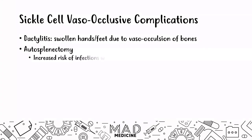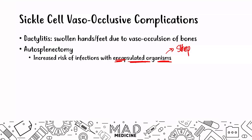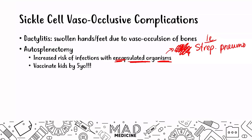Autosplenectomy puts patients at increased risk for infections with encapsulated organisms — most importantly Strep pneumoniae. You want to vaccinate these kids by age five. This also leads to increased risk of osteomyelitis, where Salmonella paratyphi is one of the main causes of osteomyelitis in sickle cell patients. Both of these associations are very important for Step 1.